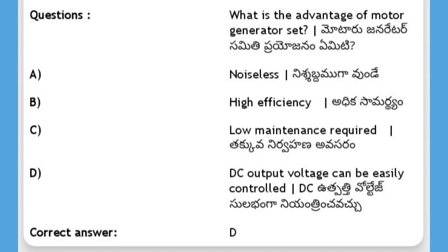What is the advantage of a motor generator set? Options: noiseless, high efficiency, low maintenance required, DC output voltage can be easily controlled. The answer is D, DC output voltage can be easily controlled.